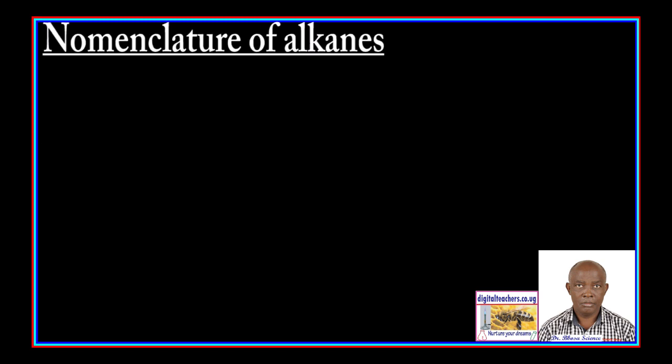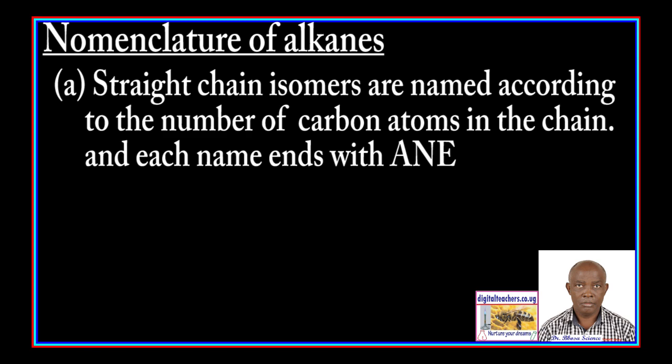Nomenclature of alkanes. Straight chain isomers are named according to the number of carbon atoms in the chain, and each name ends with A-N-E.